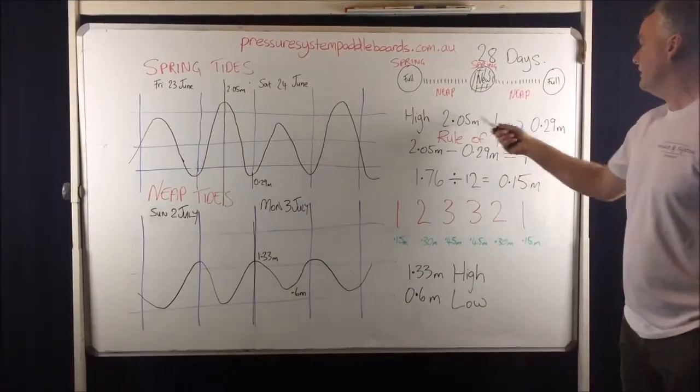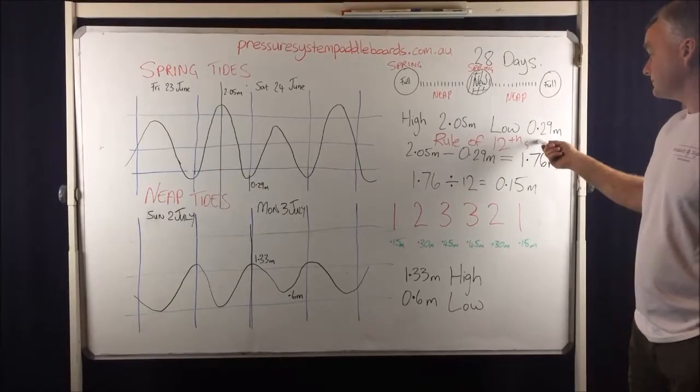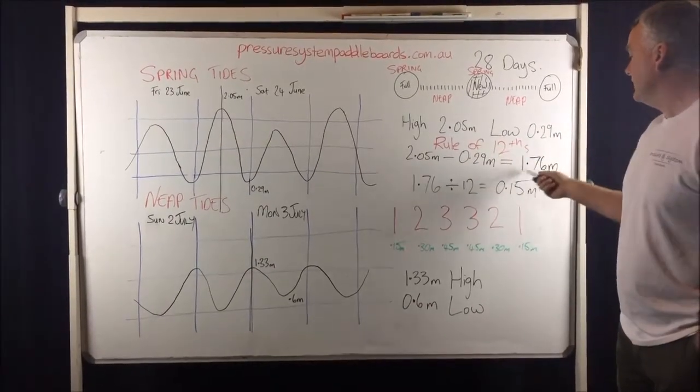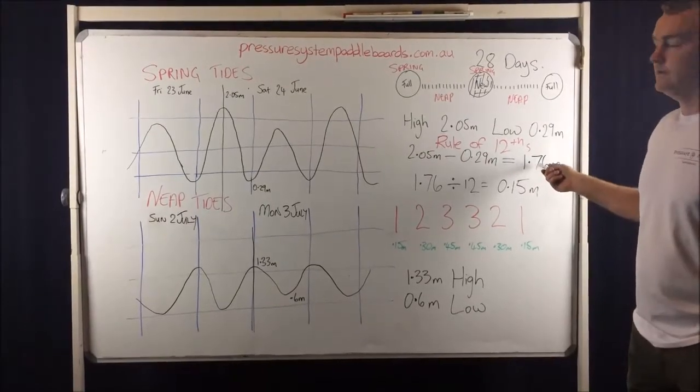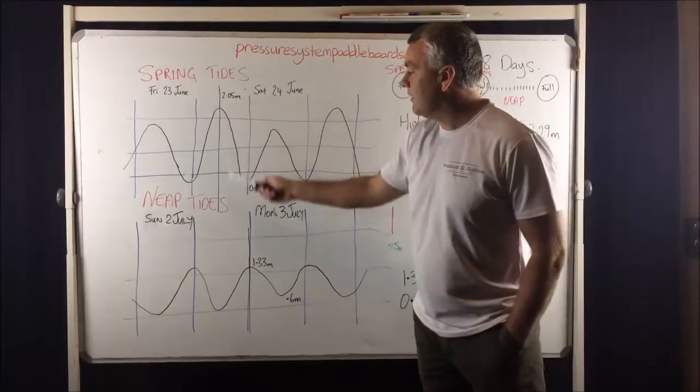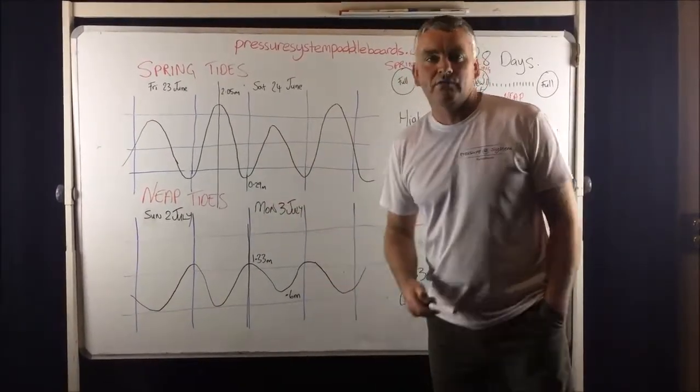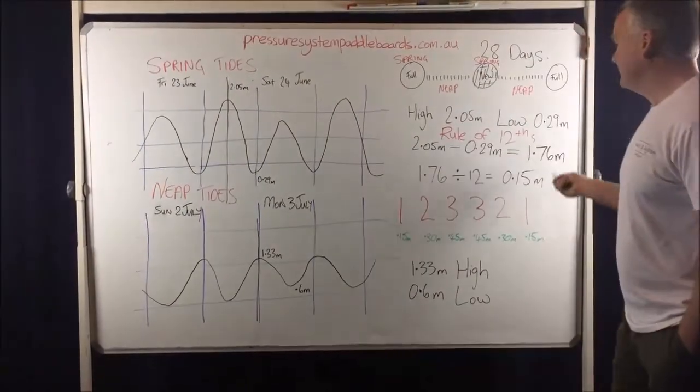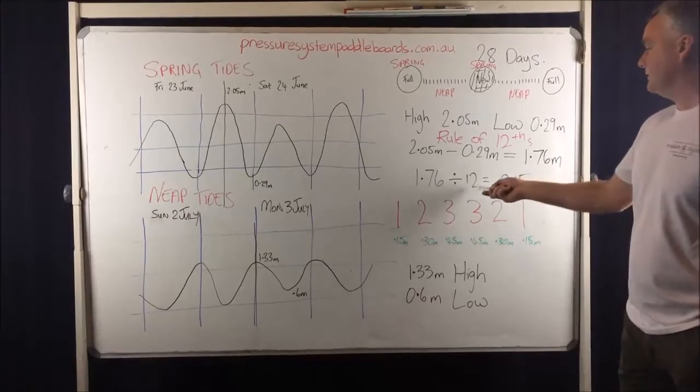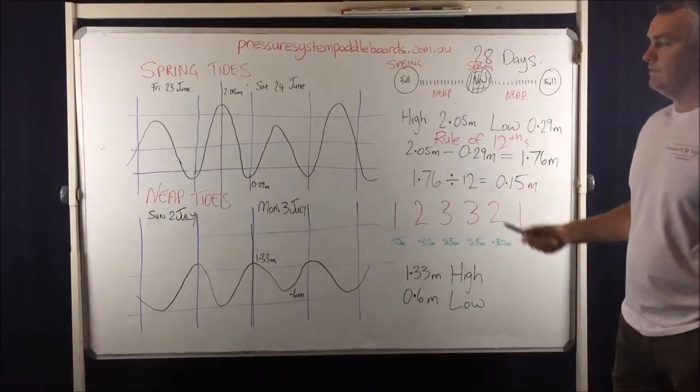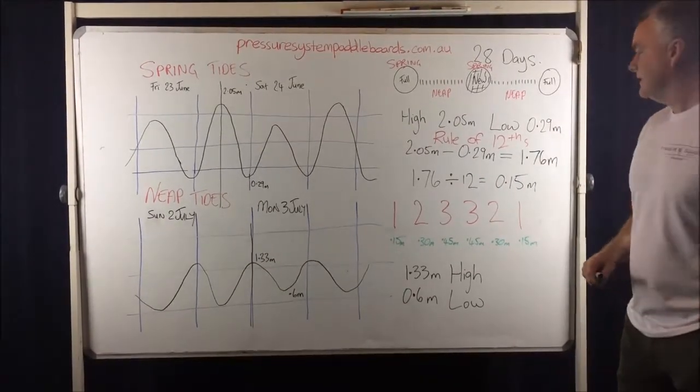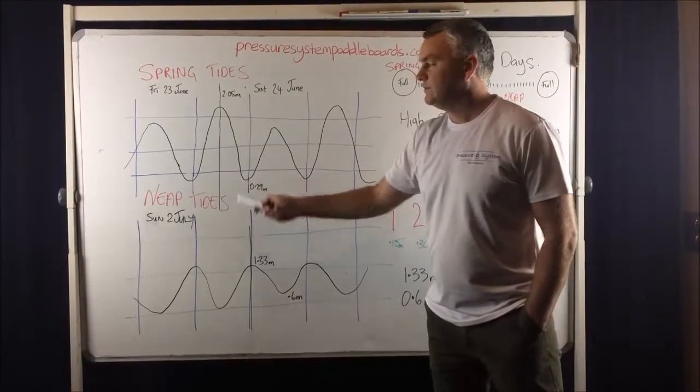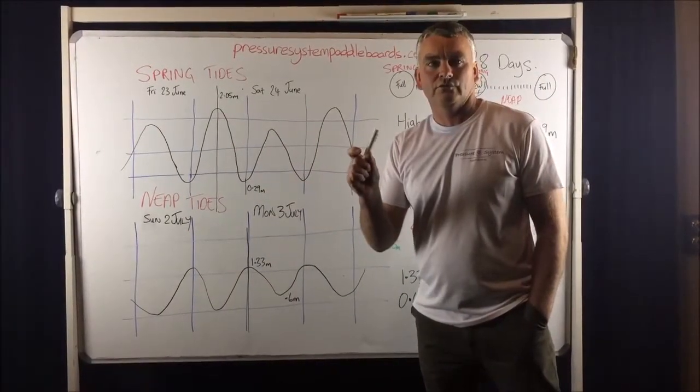So if we take this tide at 2.05 metres and the low tide 0.29, the high tide is 2.05 and the low is 0.29. And we minus 0.29 from 2.05, it gives us 1.76 metres. So the difference between the high and the low is 1.76 metres. Now to do the rule of 12, we divide that 1.76 by 12, and it gives us 0.15 of a metre. So we've divided this amount here into 12 increments. That's why it's called the rule of the 12th.